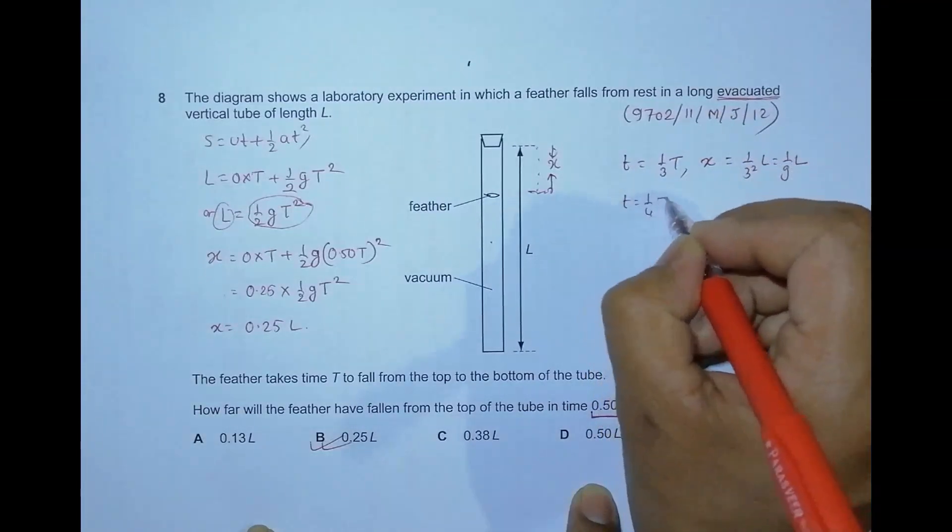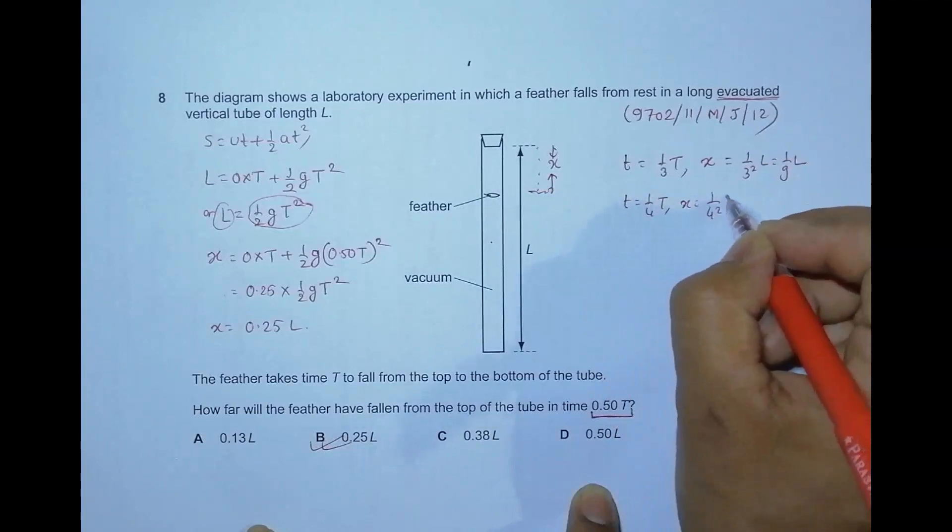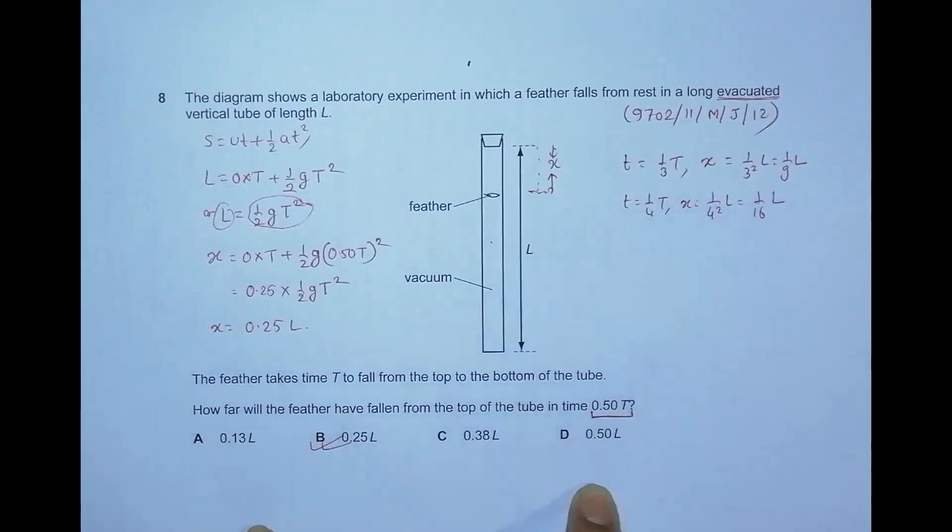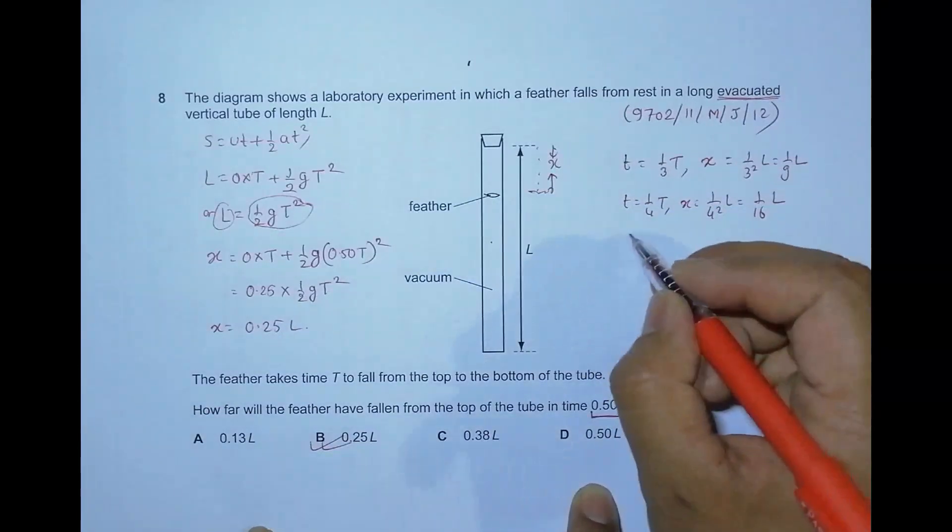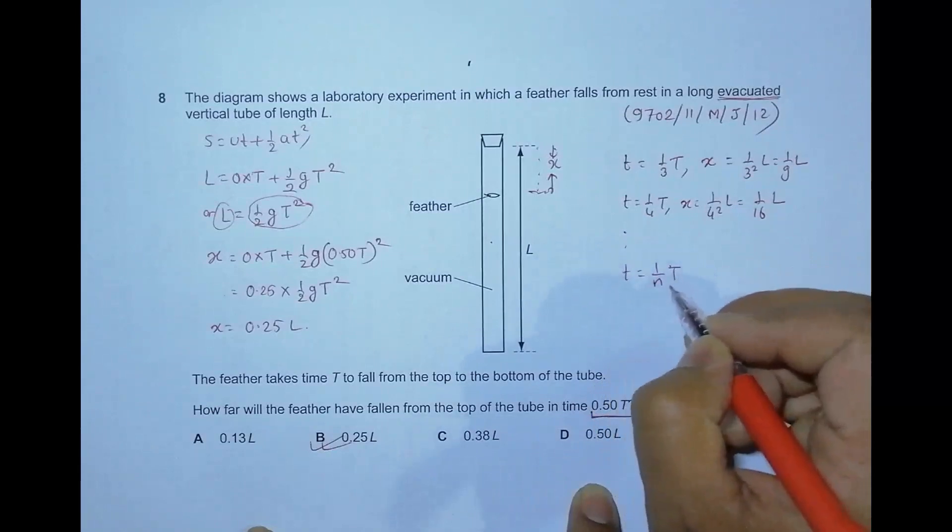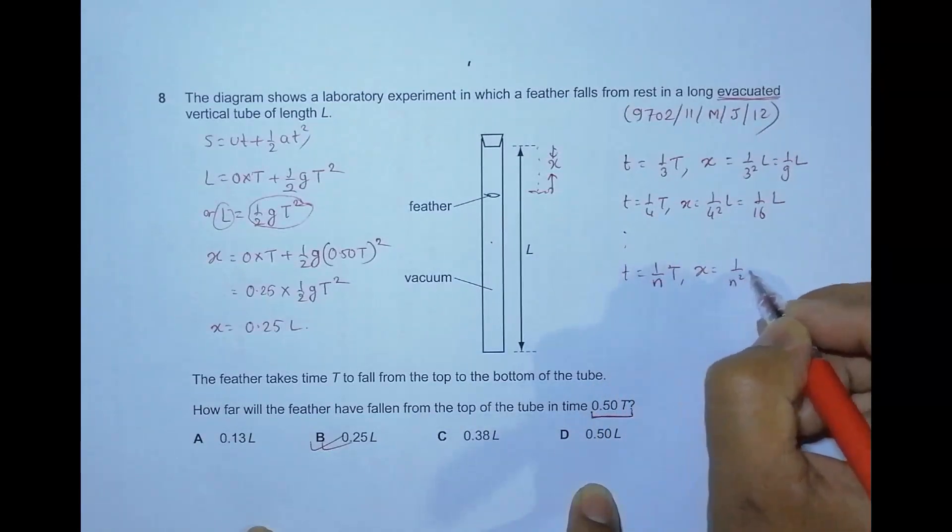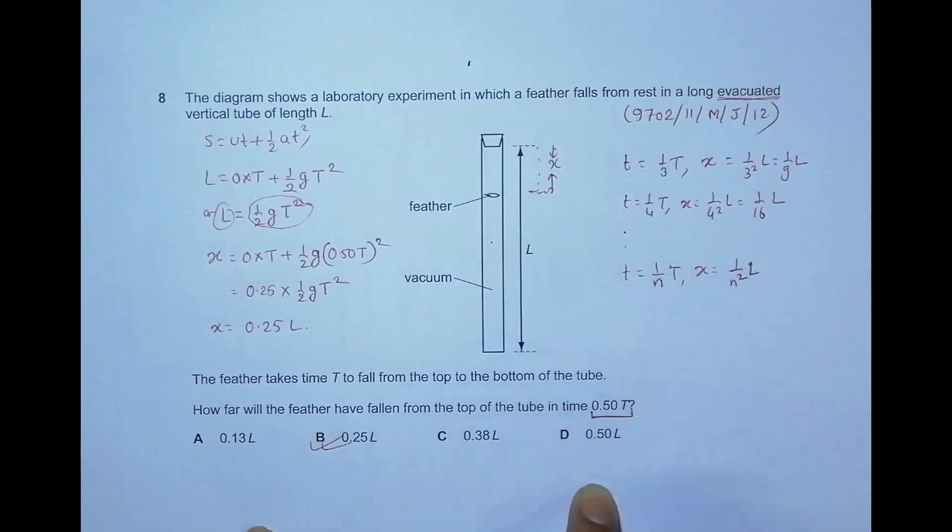If t = (1/4)t, then x = (1/16)L. So we can extend this into larger perspective: if the time is equal to t/n, then x = (1/n²)L. We can make up a formula with this type of problem. So our correct answer choice is choice B.